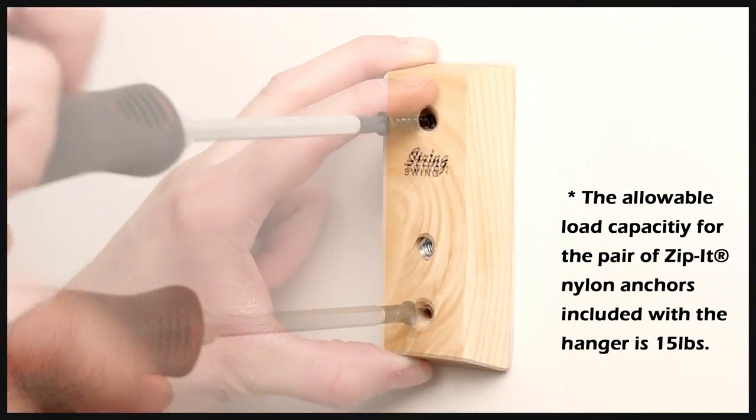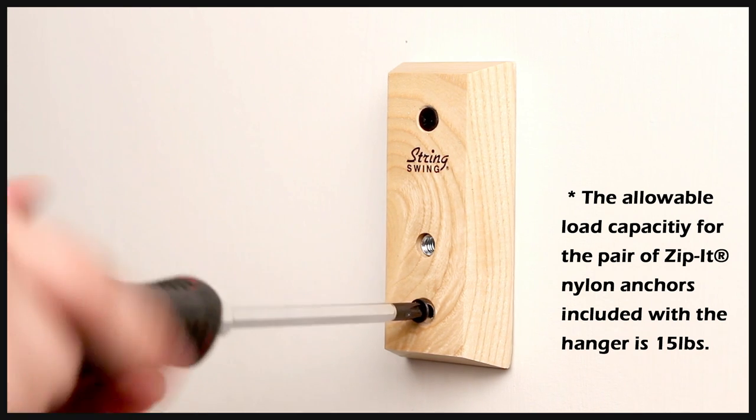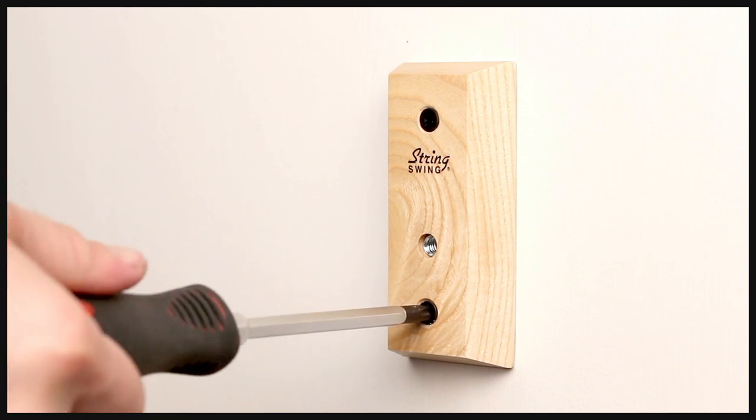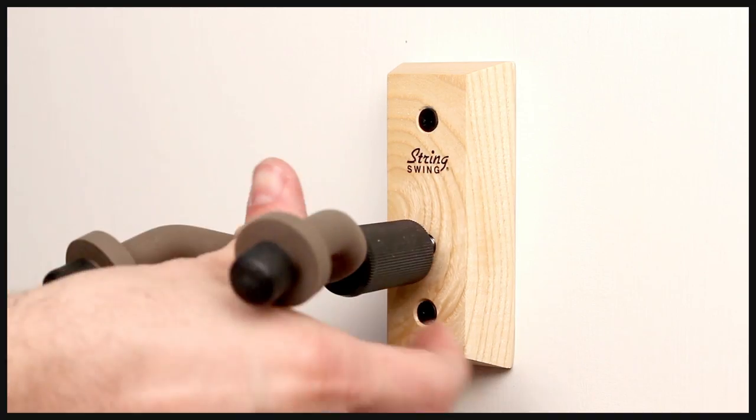Now you're ready to replace the hanger on the wall. Thread the screws through the block and into the drywall toggles. Then screw the yoke into the center hole of the block.